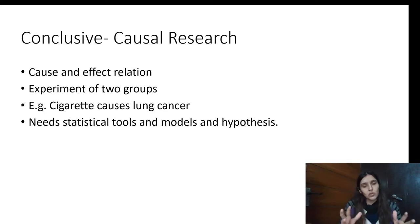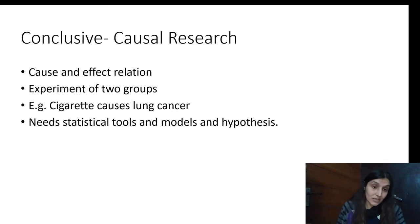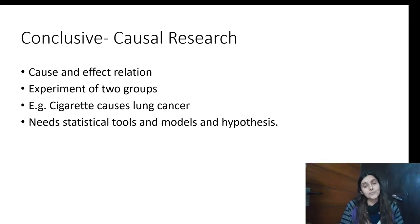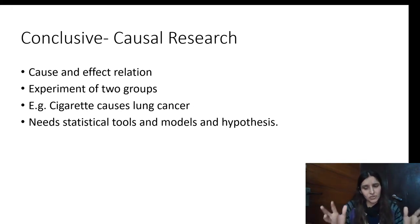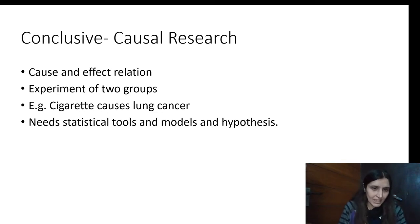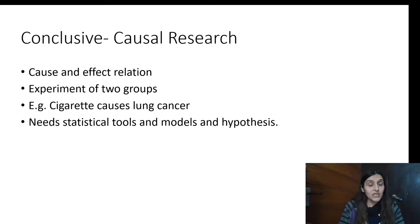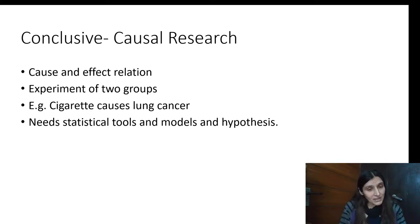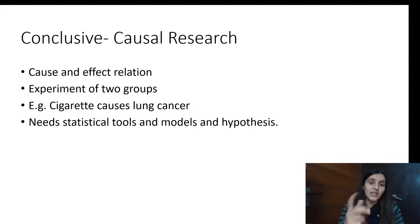Causal research is generally done through experimentation. So causal research involves an experimentation of two groups. I have to take two groups, give them one variable, and see whether that variable has an impact or an effect or an influence on them or not.